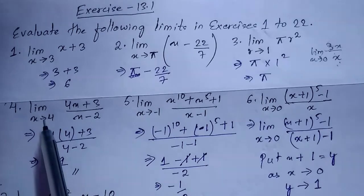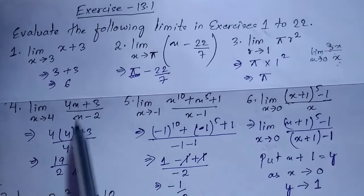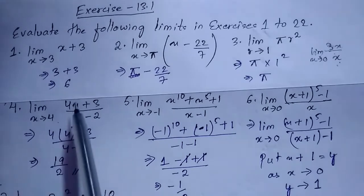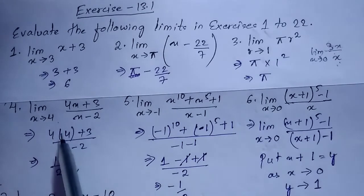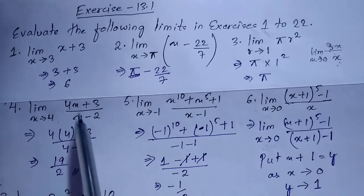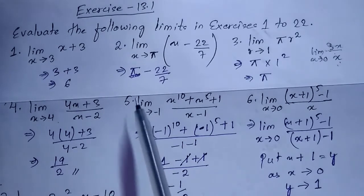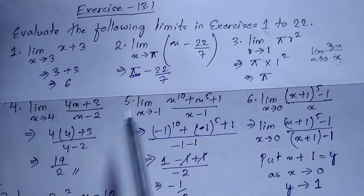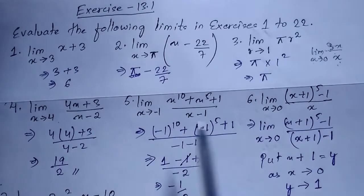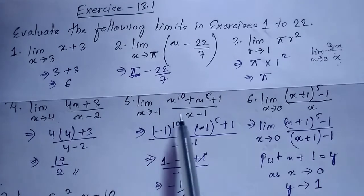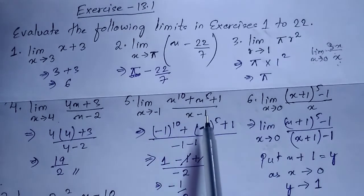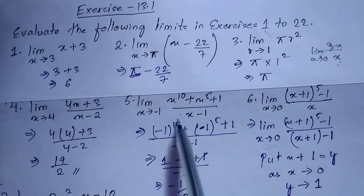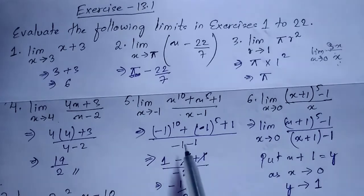Question 4: lim x→4 of (4x + 3)/(x − 2). Check the denominator first: 4 − 2 = 2, which is not 0, so you can substitute directly. Putting x = 4: numerator is 4×4 + 3 = 19, denominator is 2, so the answer is 19/2. Question 5: lim x→−1 of (x^10 + x^5 + 1)/(x − 1). Check denominator: −1 − 1 = −2, not 0, so substitute directly. Putting x = −1: numerator is (−1)^10 + (−1)^5 + 1, denominator is −2.